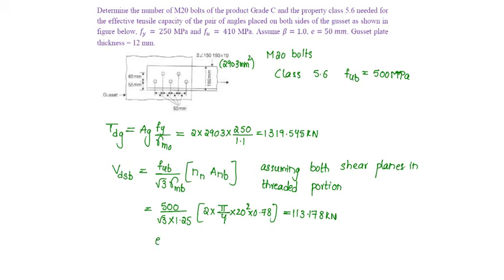We know minimum edge distance as 1.5 D0 where D0 will be for 20 mm diameter bolts T plus 2 mm clearance, so 22, which is equal to 33 mm.